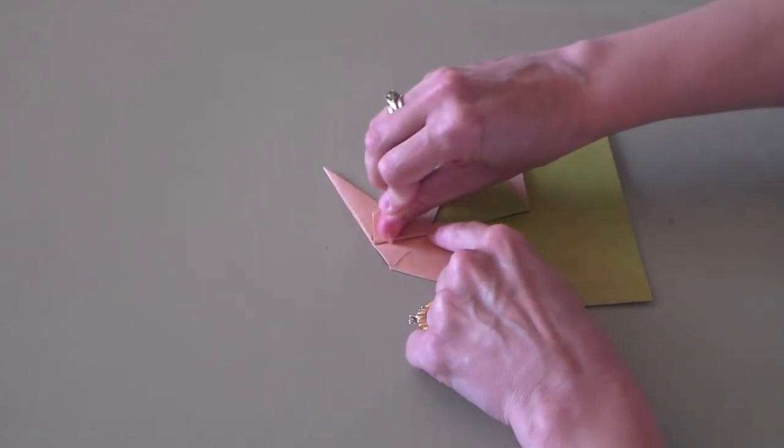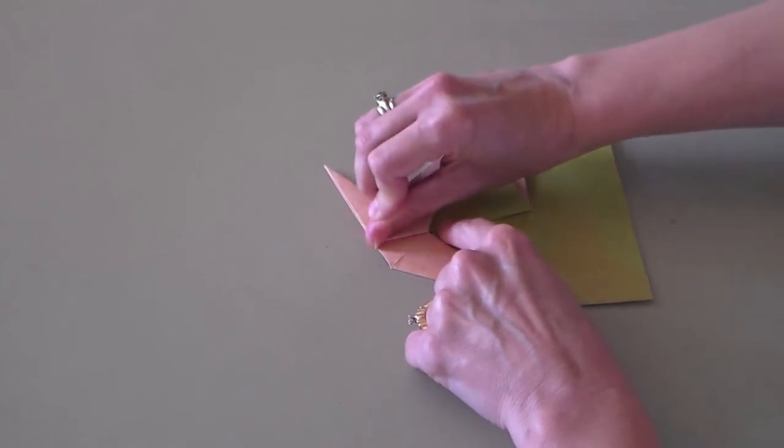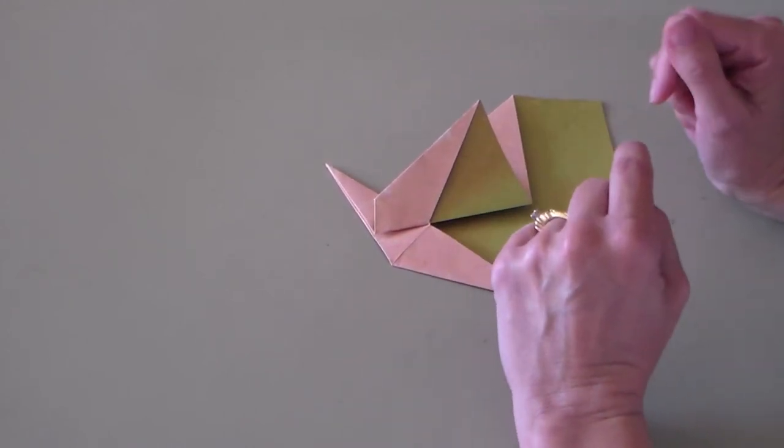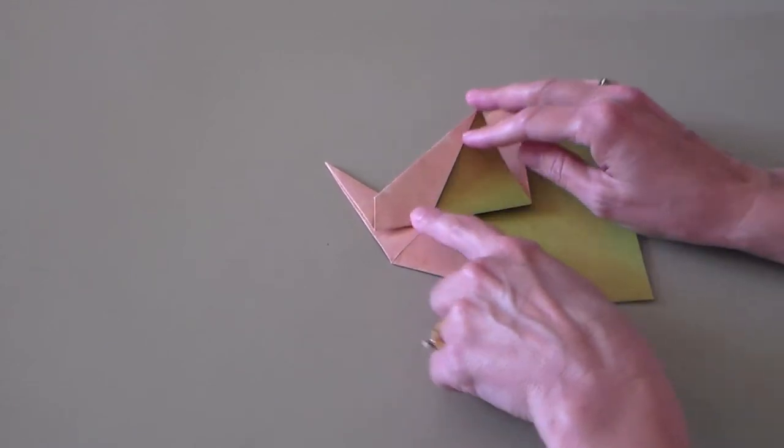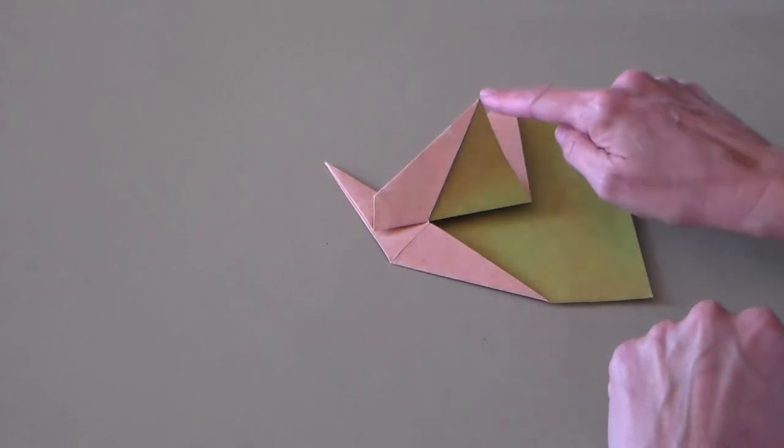And this part is pretty thick, so you may want to get something to press it down with. If you don't have a bone folder, you can always use a wooden stick. Those work really well. And we are almost finished. Now we have a body and a wing.